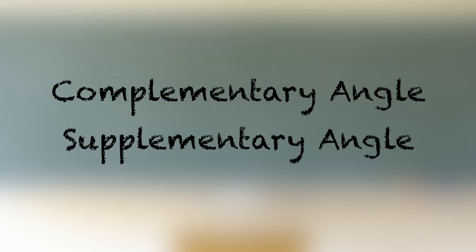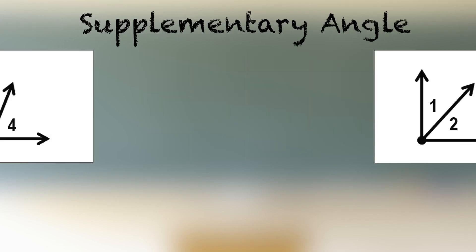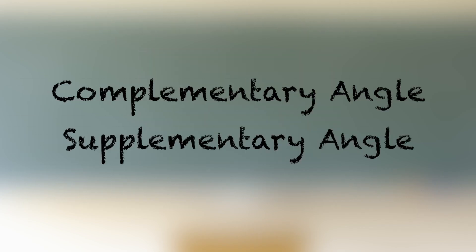Finally, there are two more terms used when identifying angles. They are used when you add the measures of two different angles. Complementary angles are two angles added together equaling 90 degrees. Supplementary angles are two angles added together equaling 180 degrees. Here are some examples. Can you recognize the difference between supplementary and complementary angles?